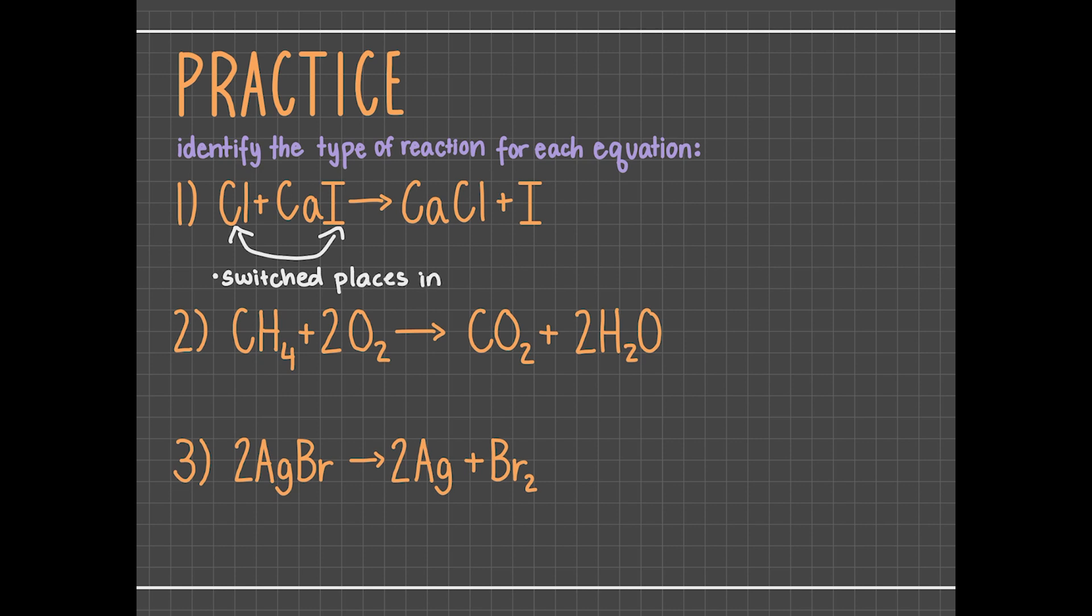Alright, so for the first reaction, chlorine and calcium iodide produced calcium chloride and iodine. Well, we can see that chlorine and iodine switched places when they were reacted, as calcium and iodine were bonded together on the reactant side, but calcium and chloride were bonded together as products. Thus, one element is replacing the other in this reaction, so it's a single replacement reaction.